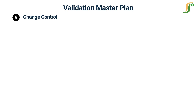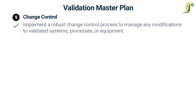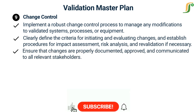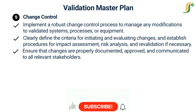The ninth step is change control. Implement a robust change control process to manage any modifications to validated systems, processes, or equipment. Clearly define the criteria for initiating and evaluating changes, and establish procedures for impact assessment, risk analysis, and revalidation if necessary. Ensure that changes are properly documented, approved, and communicated to all relevant stakeholders.